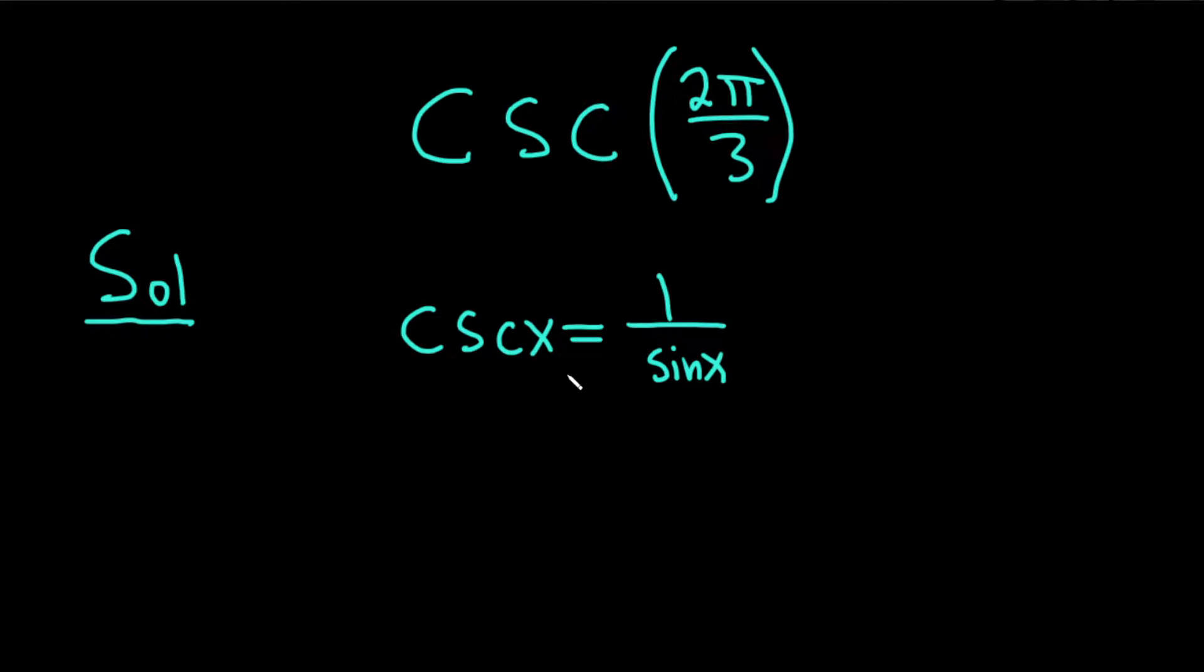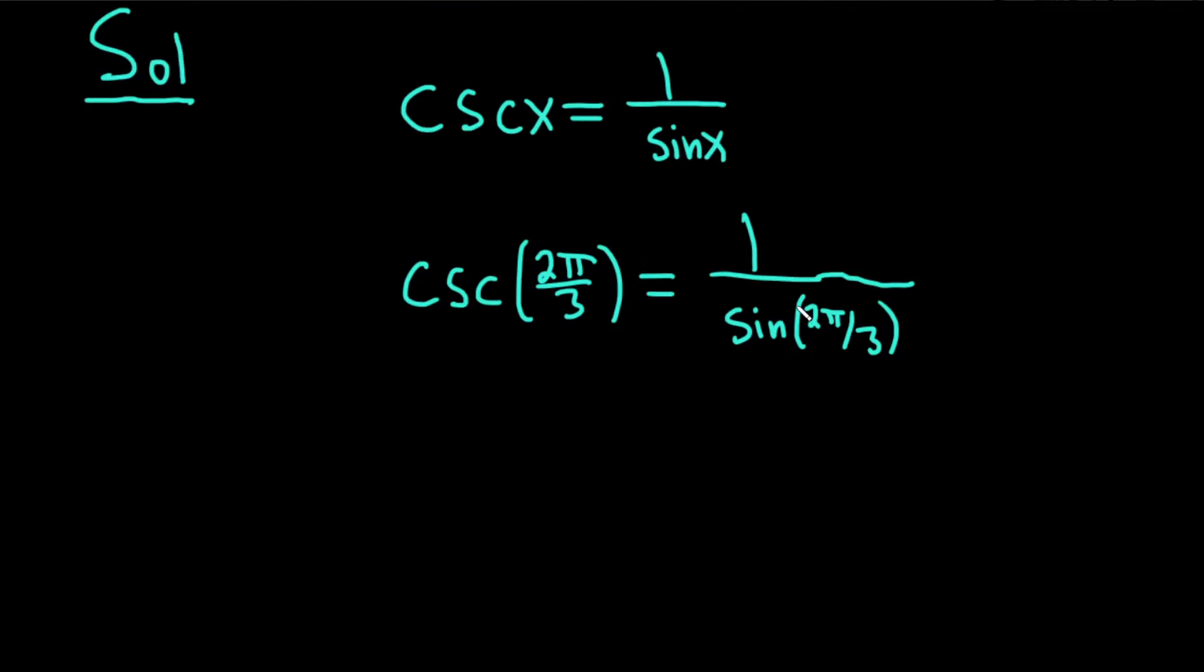So in this problem we really have to compute the sine of 2π over 3. If you look at the cosecant of 2π over 3, this is equal to 1 over sine 2π over 3. So if we can compute sine 2π over 3, we can use this formula to get the answer. Let's go ahead and focus on that.